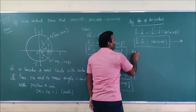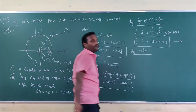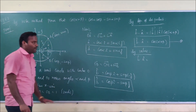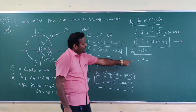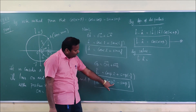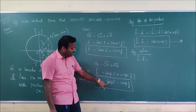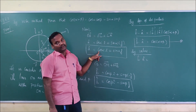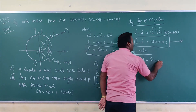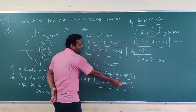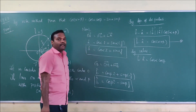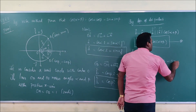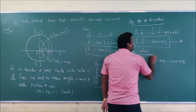Now we find the value of B-cap · A-cap by multiplying components. The i-cap components give cosβ × cosα = cosα cosβ. The j-cap components give sinα × (-sinβ) = -sinα sinβ. So B-cap · A-cap = cosα cosβ - sinα sinβ. This is equation 2.